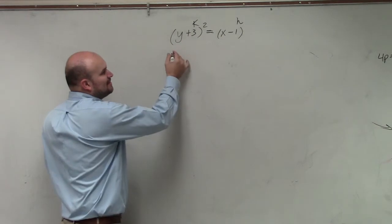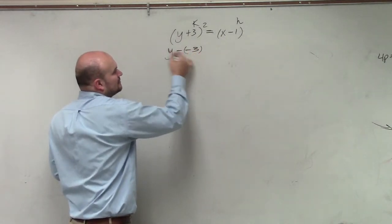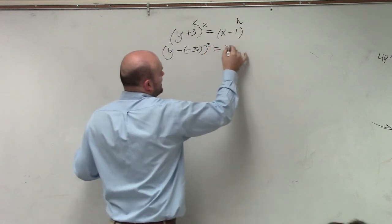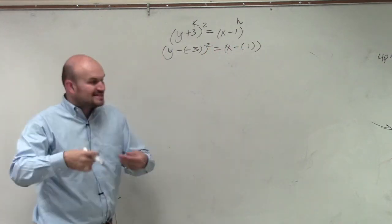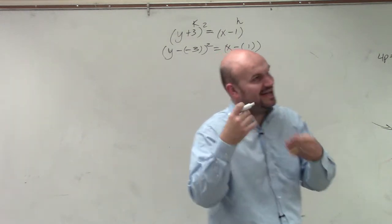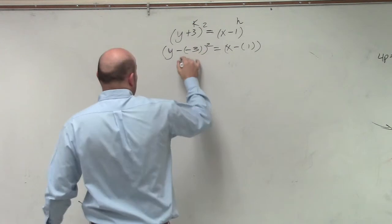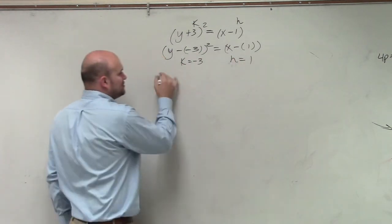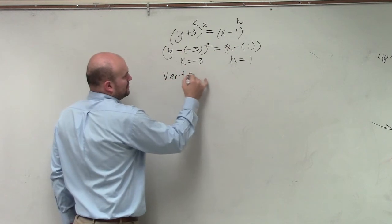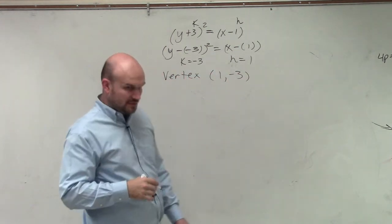We need to identify our h and our k. Just remember, we can rewrite this as y minus 3 squared equals x minus 1, because it's x minus h, y minus k. So we can say k equals negative 3, h equals 1. So my vertex is going to be 1 comma negative 3.